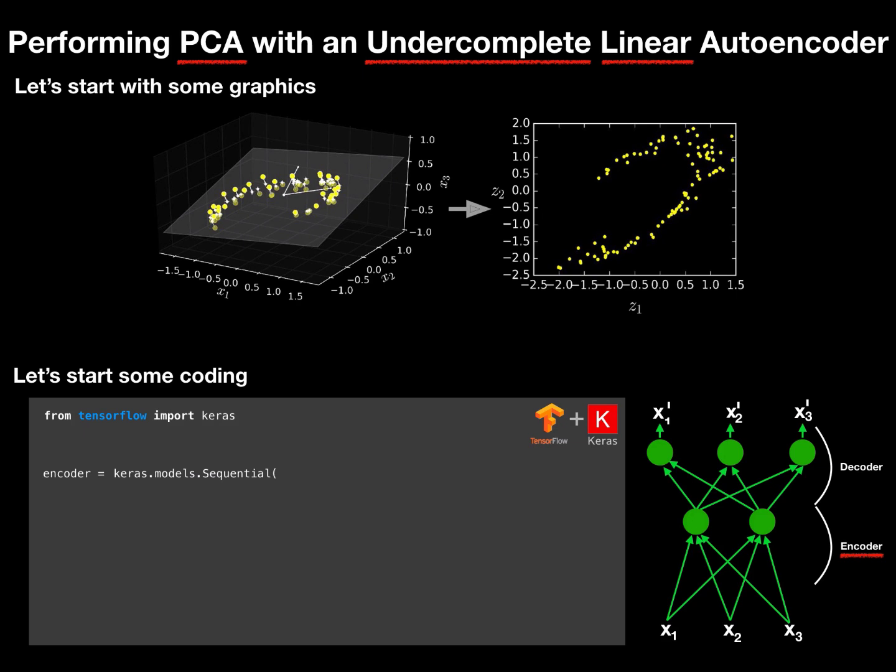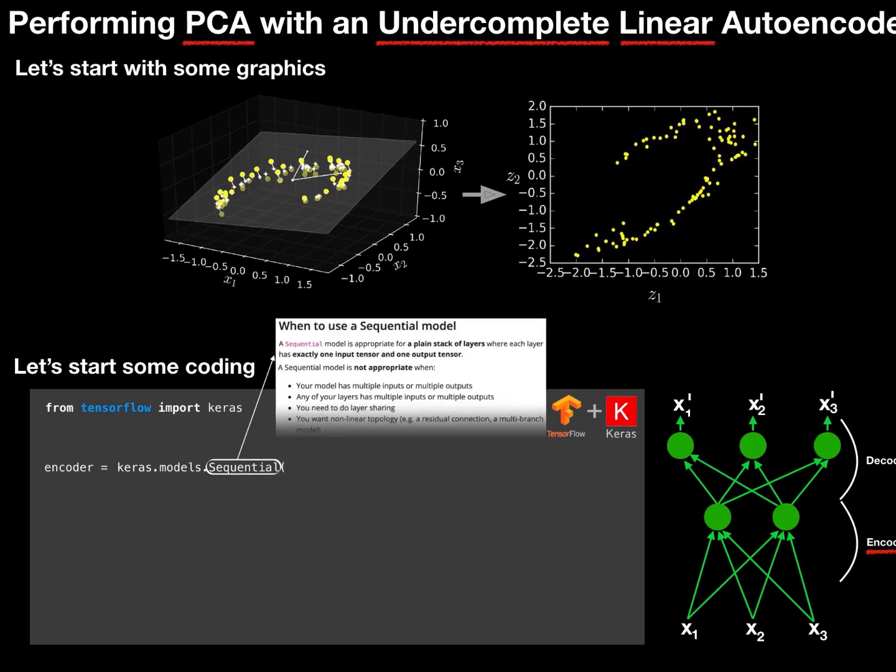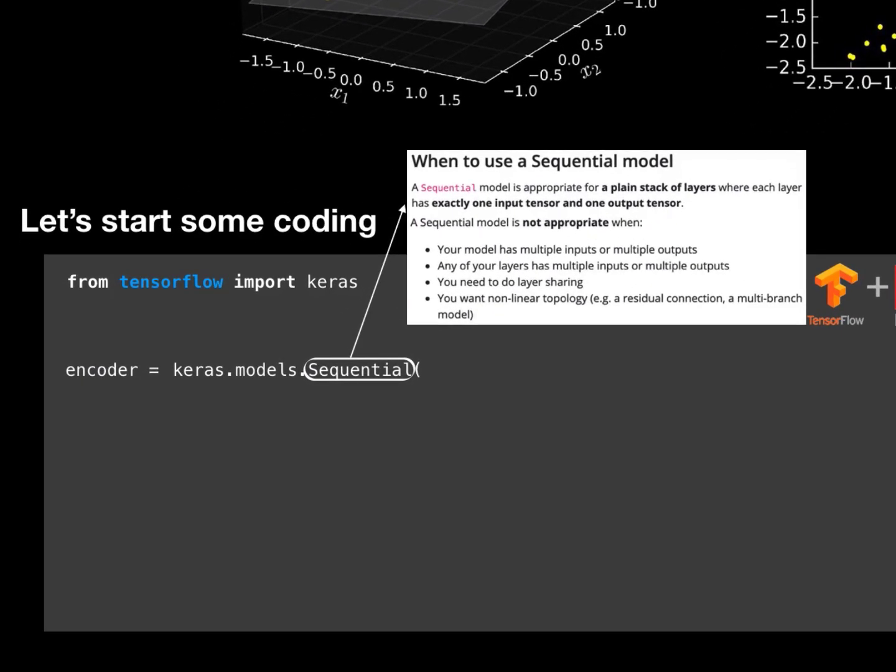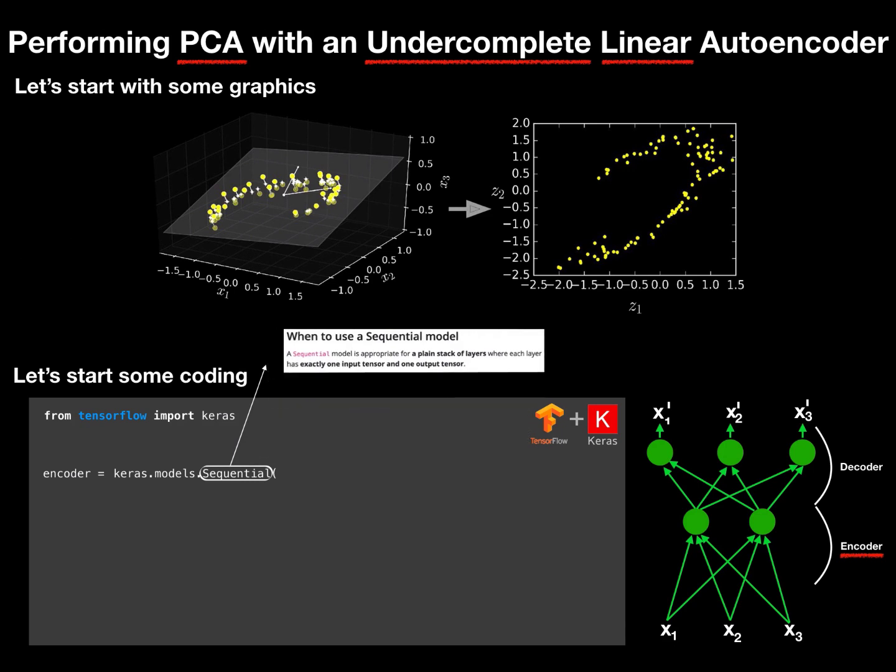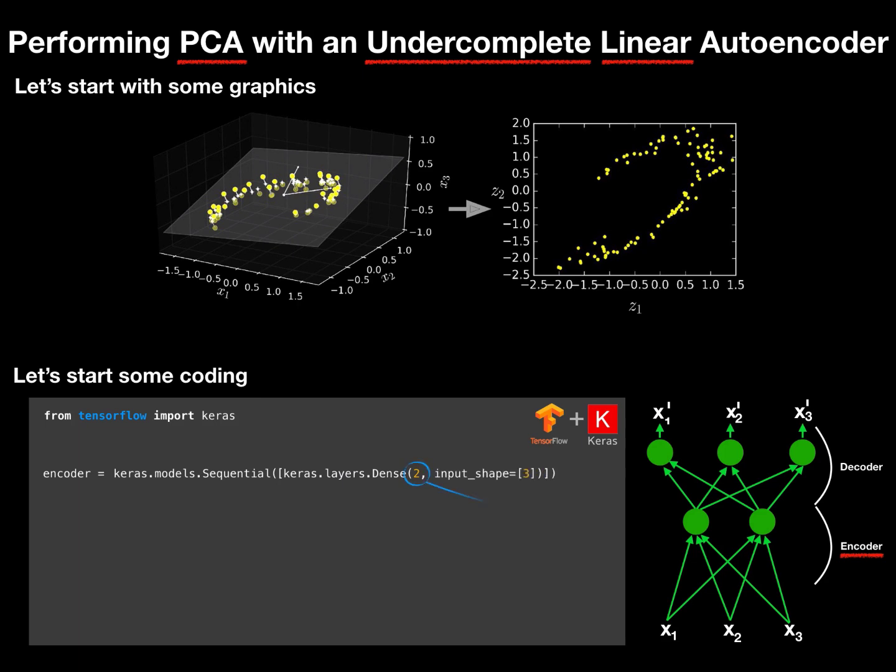Wait, what is a sequential network? The official TensorFlow documentation tells us that a sequential model is appropriate for a plain stack of layers where each layer has exactly one input tensor and one output tensor. A sequential model is not appropriate when: first, your model has multiple inputs and multiple outputs; second, any of your layers has multiple inputs or multiple outputs; third one, you need to do layer sharing; and the last one, you want non-linear topology, for example, for a multi-branched model. This line of code defines our encoder as a dense layer with two nodes in the hidden layer and three inputs as input shape.